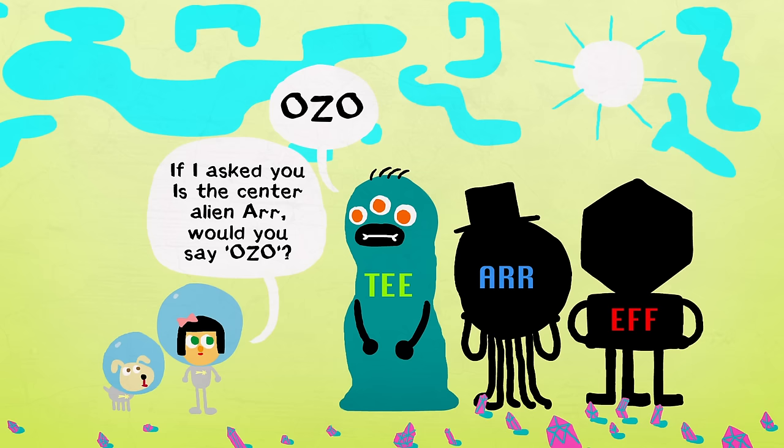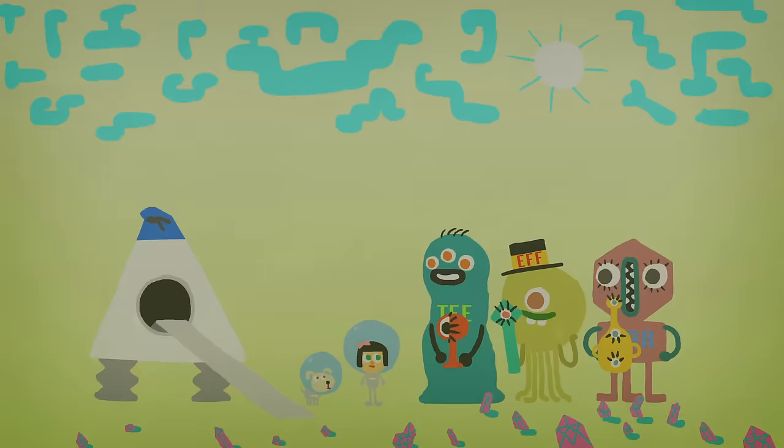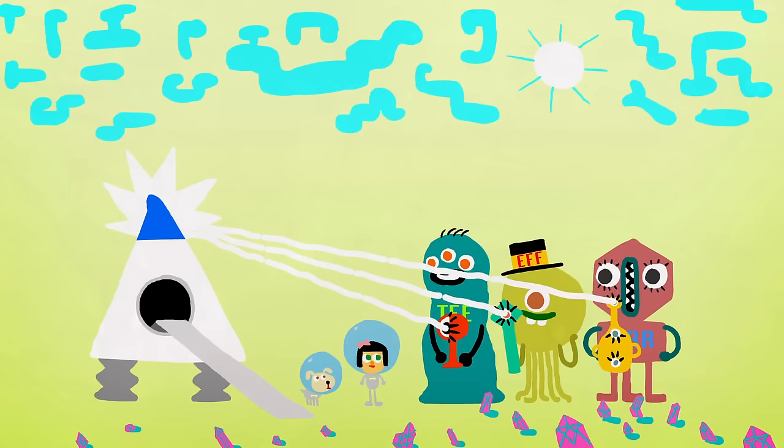Now that you know whether its answers are true or false, ask the same alien whether the center overlord is R. The process of elimination will identify the remaining one.